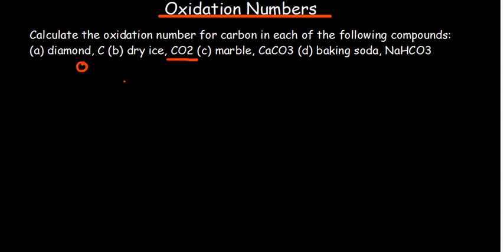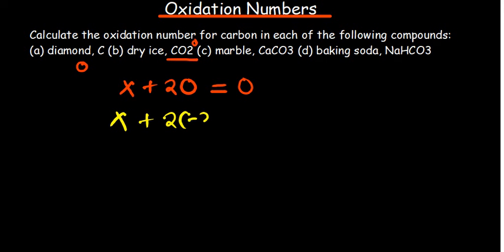For CO₂, we put X for carbon and we have two oxygen atoms. There's no charge, so the sum of oxidation numbers equals zero. Substituting: X plus two times negative two equals zero. X minus four equals zero, so X equals positive four. The oxidation state of carbon in CO₂ is positive four.